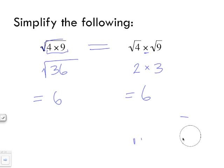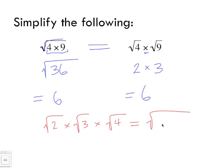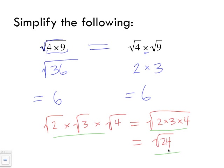If I gave you the square root of two times the square root of three times the square root of four, another way of writing this is to put the whole thing under one radical symbol: the square root of two times three times four. We can continue to simplify: two times three is six, six times four is twenty-four. Knowing how to go between these forms — and back again — is really what this lesson is about.